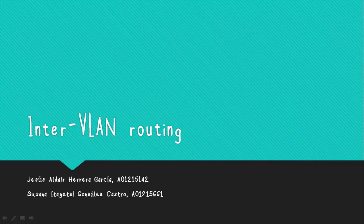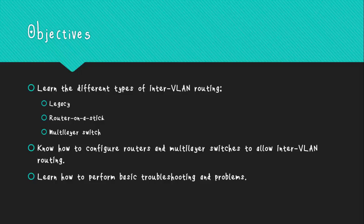Chapter 5 refers to InterVLAN routing, which is a way to forward network traffic from one LAN to another. The objective of this chapter is getting familiar with the different types of InterVLAN routing, which are legacy InterVLAN routing, router on a stick, and multilayer switch.